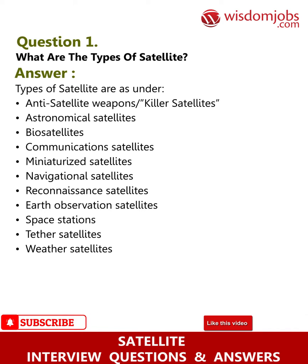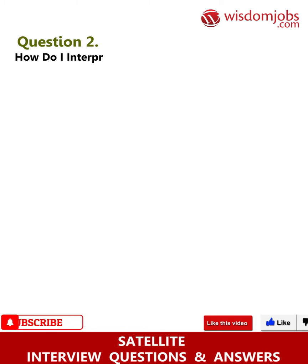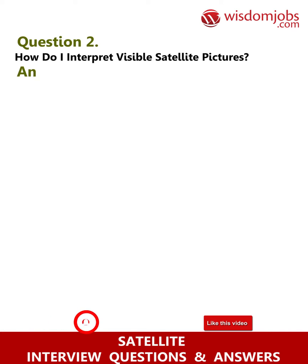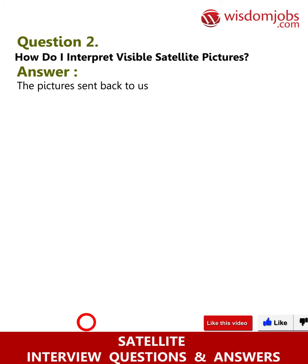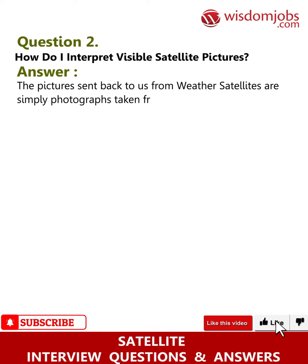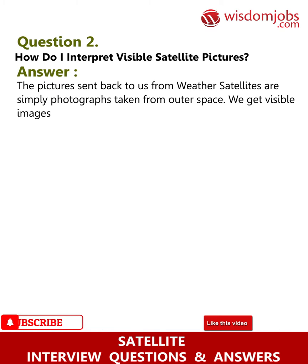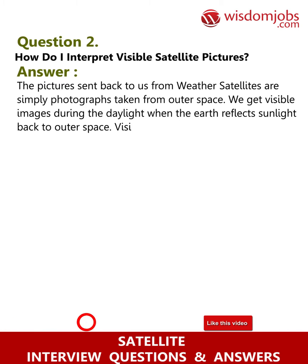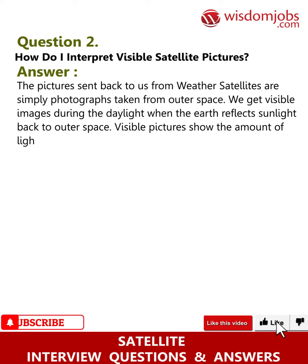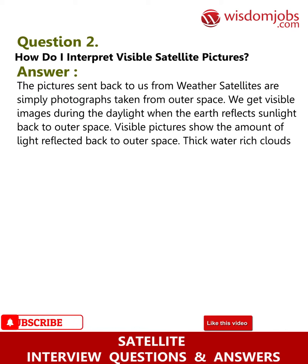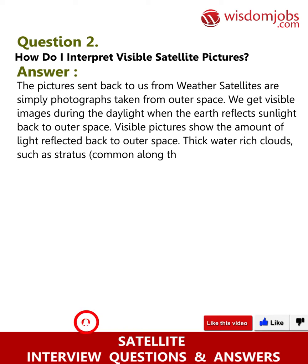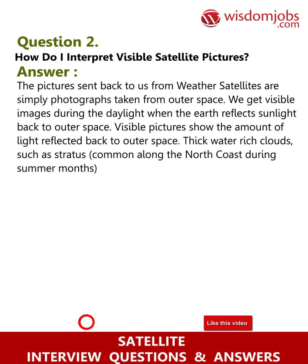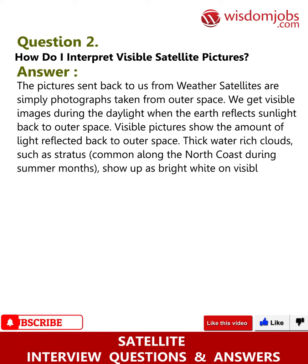Question 2: How do I interpret visible satellite pictures? Answer: The pictures sent back to us from weather satellites are simply photographs taken from outer space. We get visible images during daylight when the Earth reflects sunlight back to outer space. Thick, water-rich clouds such as stratus, common along the north coast during summer months, show up as bright white on visible pictures.